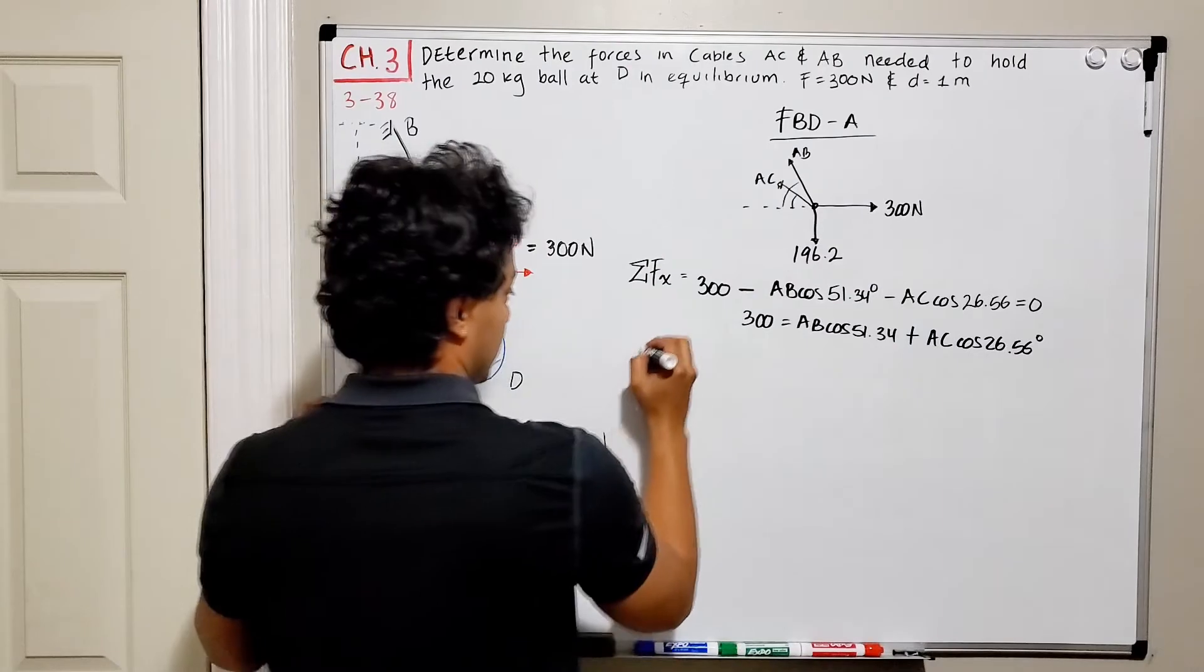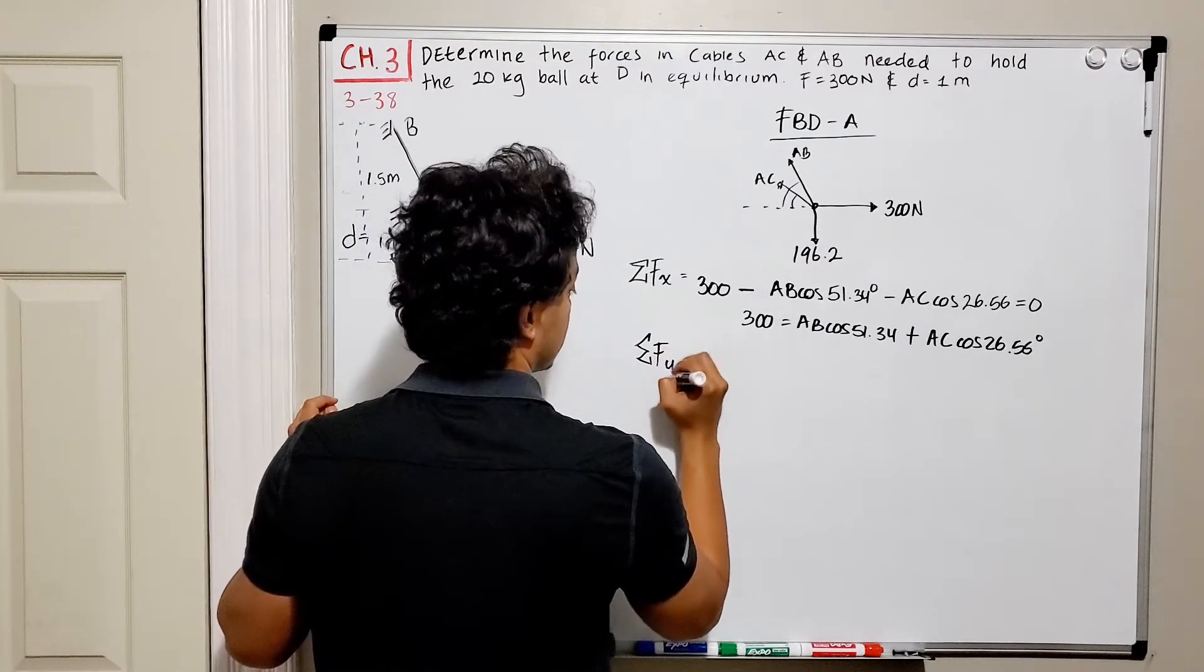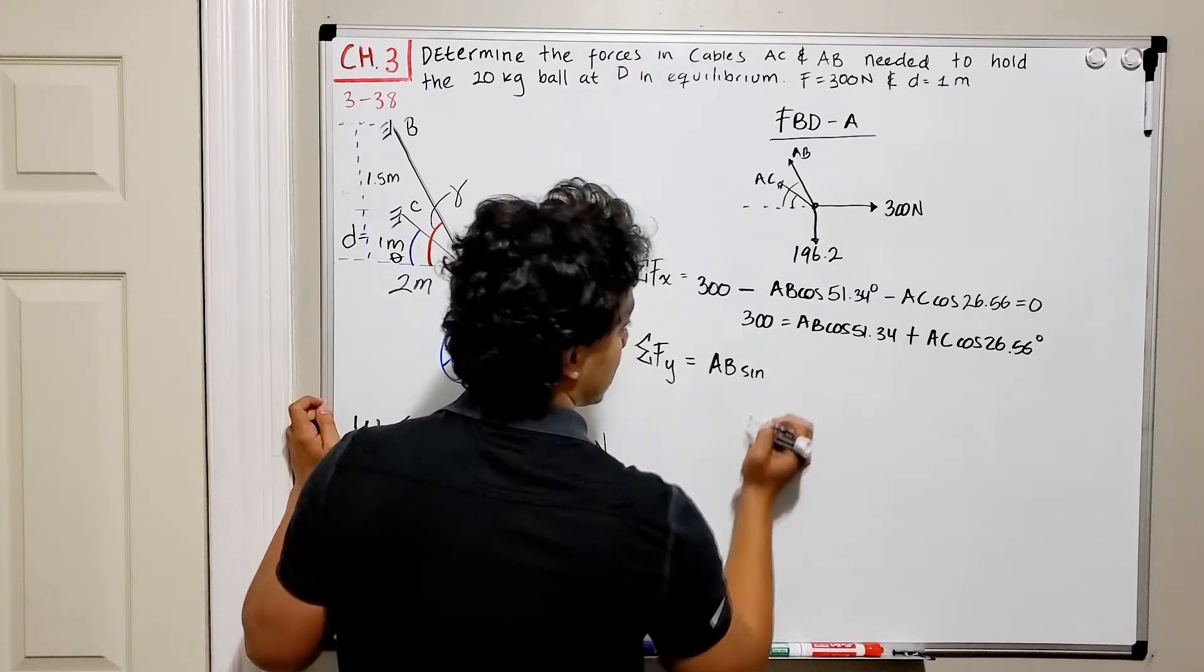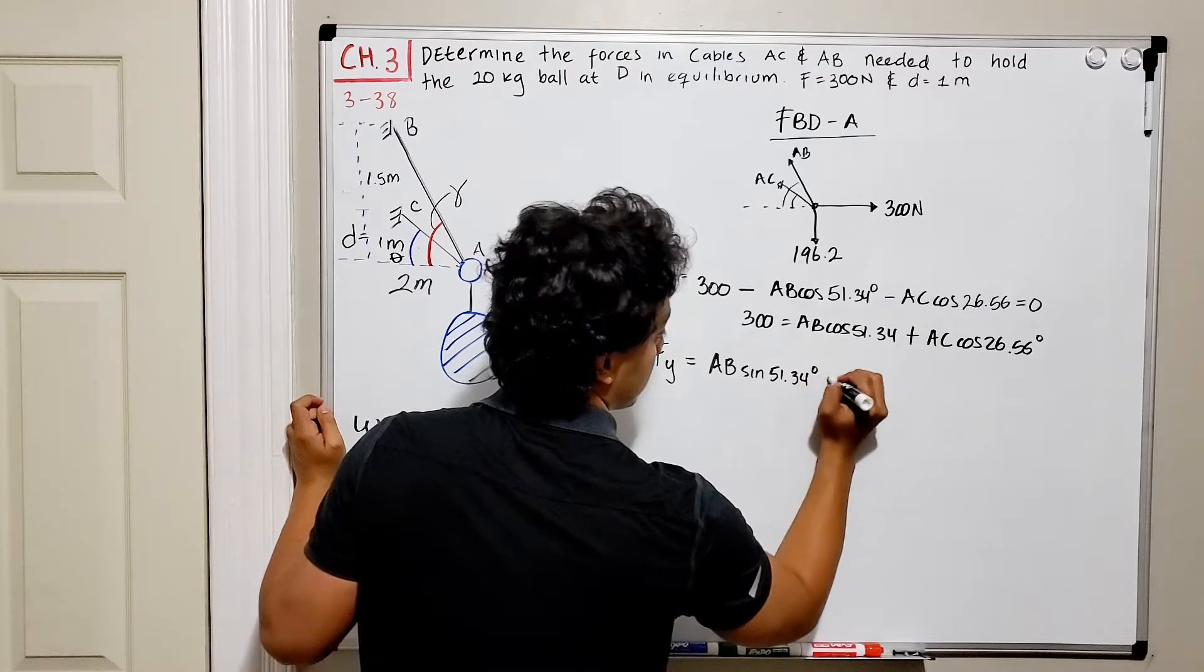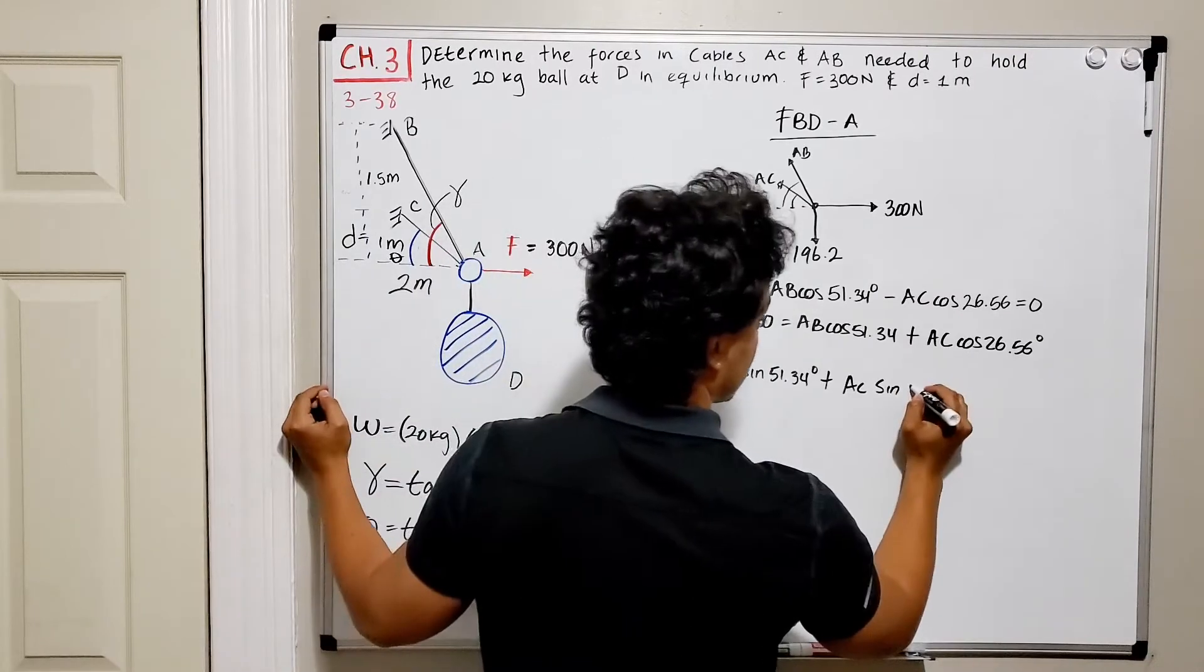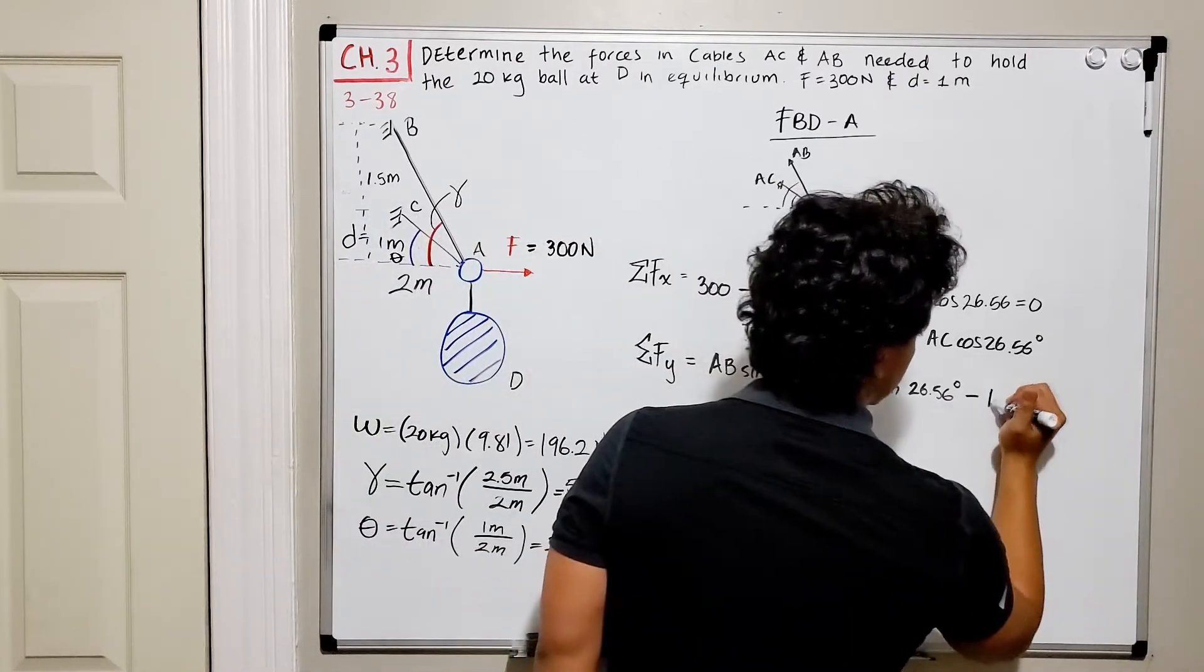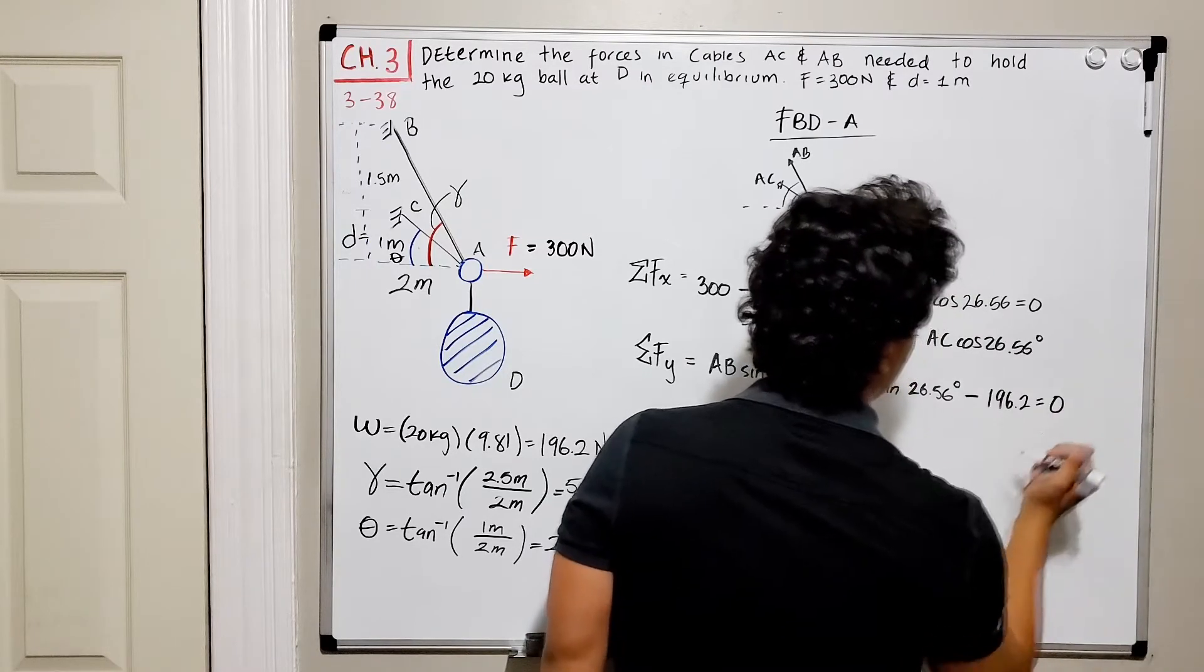And now let's do the summation of forces in the y direction. We have AB going up. So we got AB positive multiplied by the sine of its angle, which is 51.34, plus AC multiplied by the sine of its angle, which is 26.56, minus 196.2. And this should be all equal to zero.